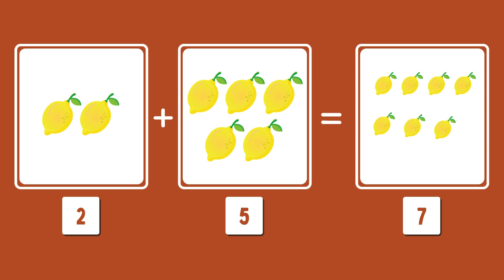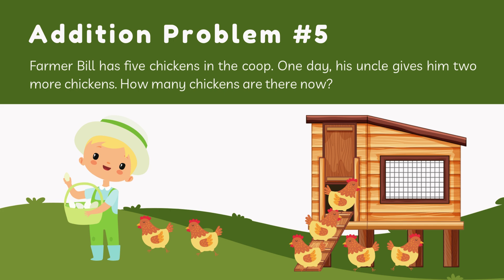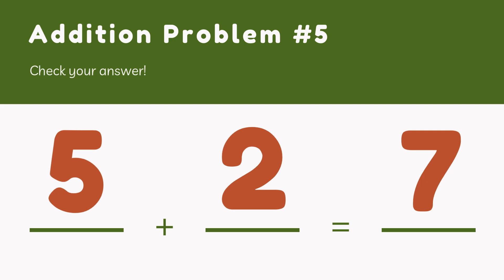I have got another addition problem here. Farmer Bill has five chickens in the coop. One day his uncle gives him two more chickens. How many chickens are there now? Can you guess and count and tell me the right answer? He got five and two more, which makes it seven chickens. Good job, kids.